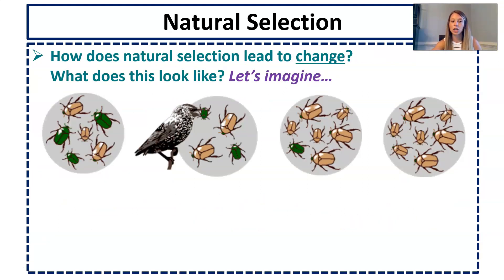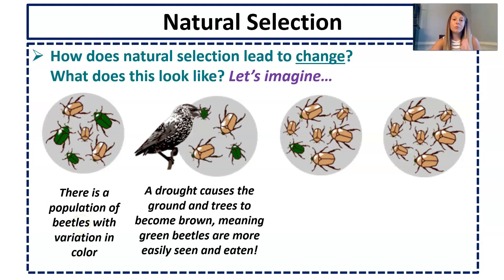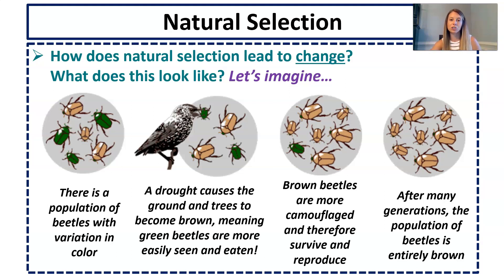So how does that lead to change? Imagine we have a population of beetles with variations in color — some green, some brown, light green, light brown, dark green, dark brown. Then we have an environmental change: a drought causes the ground and trees to become brown, meaning brown beetles blend in and green beetles are more easily seen and eaten by predators. Brown beetles are more camouflaged, more likely to survive, reproduce, and pass on those brown beetle genes until after many generations the population is entirely brown. There has been evolution in the population because of natural selection.